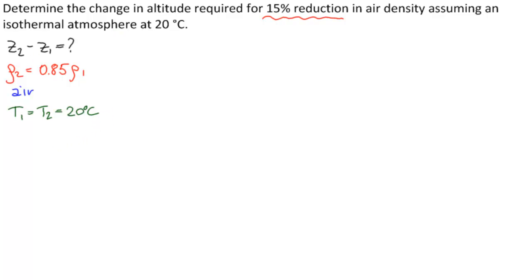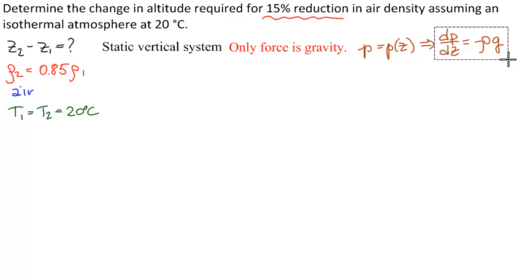What is our system? We have a static vertical system. So that means our only force is gravity. So that means P equals P of Z. And we can conclude that the partial derivatives with respect to Z are actual derivatives with respect to Z. And we have minus rho G. So this is our starting point.